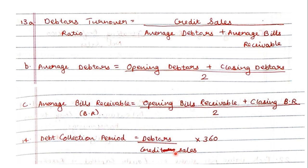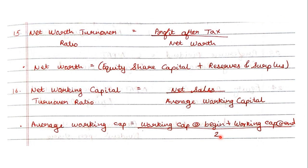Next is the debt collection period, which is debtors upon credit sales into 360. Next is net worth turnover ratio: profit after tax upon net worth. Net worth is equity share capital plus reserves and surplus. Net working capital turnover ratio is net sales upon average working capital. Average working capital is working capital at the beginning plus working capital at the end divided by 2.